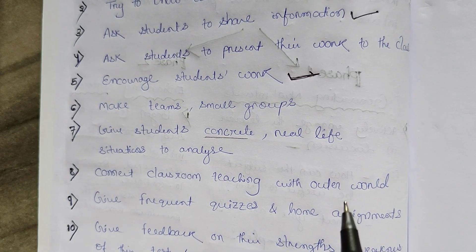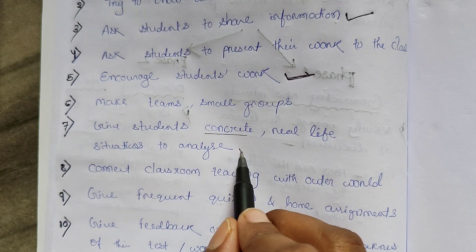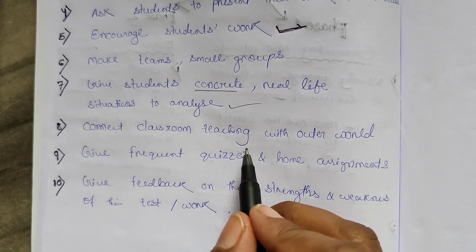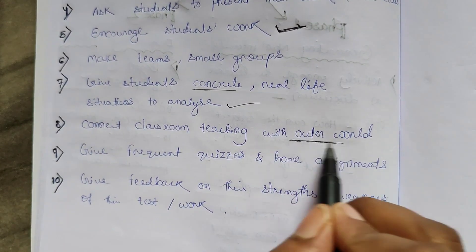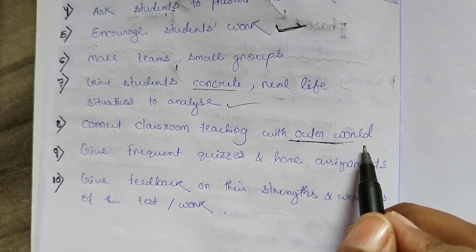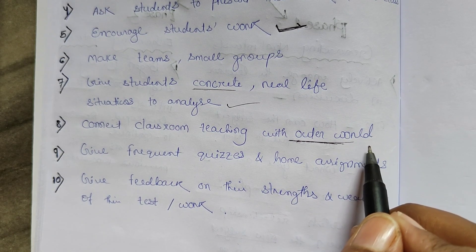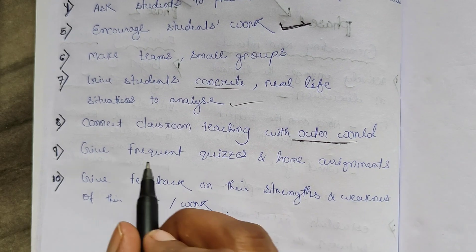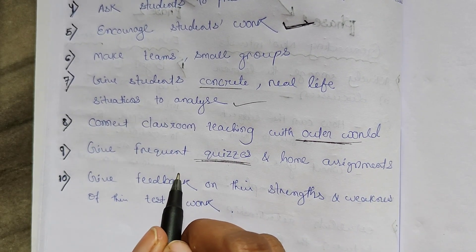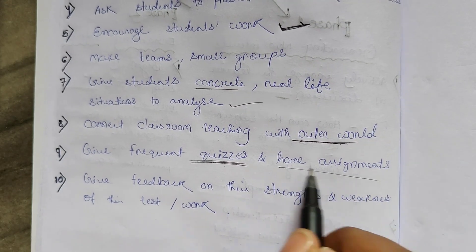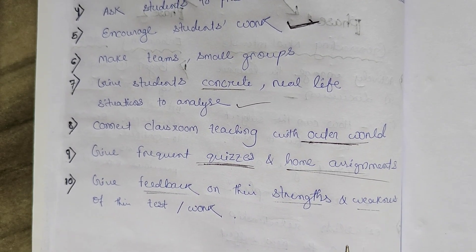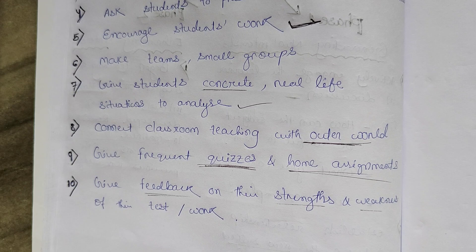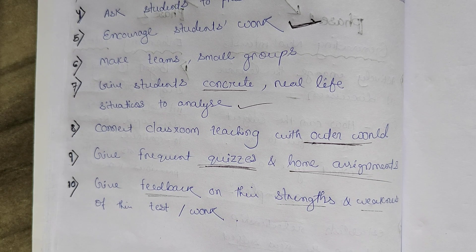Give students concrete — meaning hands-on, feel and touch — real life situations to analyze. Connect classroom teaching with the outer world: their day-to-day life, environment, and society. Give frequent quizzes, ask questions, give homework assignments, and give feedback and comments on their strength and weakness. Tell students what they are good at and where they are weak. This will promote interest in the students.